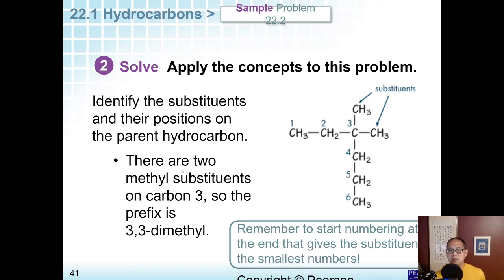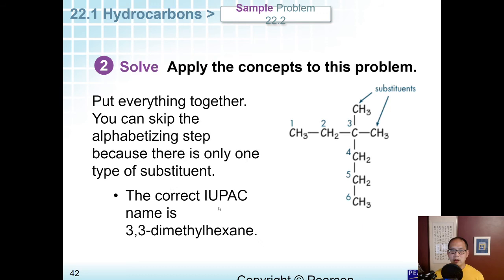There's two methyl substituents on carbon 3. So the prefix is going to be 3,3-dimethyl. Di meaning 2. 3,3 tells us that they're both on the 3 carbon. And then we just put everything together. 3,3-dimethylhexane. We don't need to worry about alphabetizing because there's only one type of substituent here.